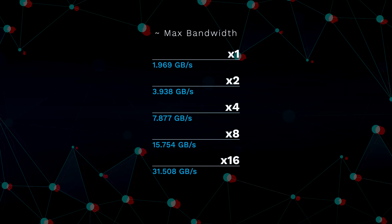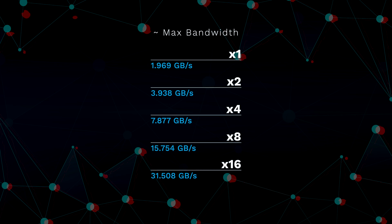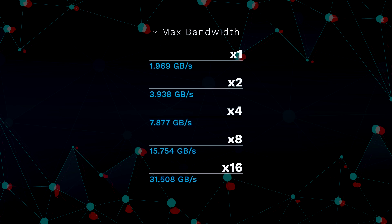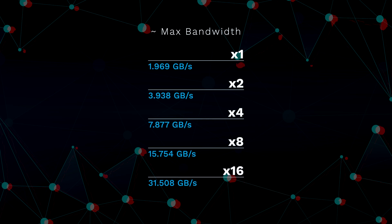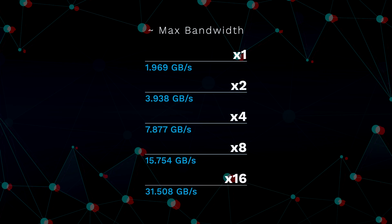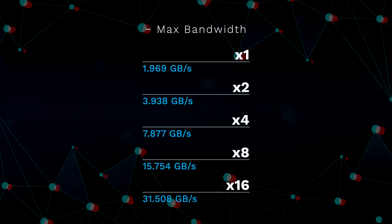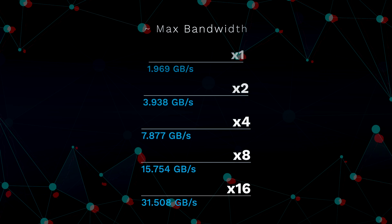The PCIe 4.0 standard debuted in 2017 and offered 31.508 gigabytes per second of bandwidth with the X16 slot. PCIe 4.0 brought double the speeds of 3.0. This meant that the bandwidth for the X1 slot with PCIe 4.0 was 1.969 gigabytes per second, the X2 slot was 3.938 gigabytes per second, the X4 slot was 7.877 gigabytes per second, the X8 slot was 15.754 gigabytes per second, and the X16 slot was 31.508 gigabytes per second.